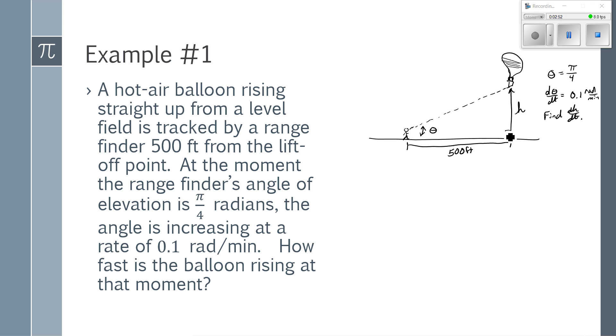So I do have a right triangle here. So it's right triangle trigonometry. h would be the opposite side, 500 would be the adjacent. So the tangent of theta equaling h over 500 is a great equation to start with.